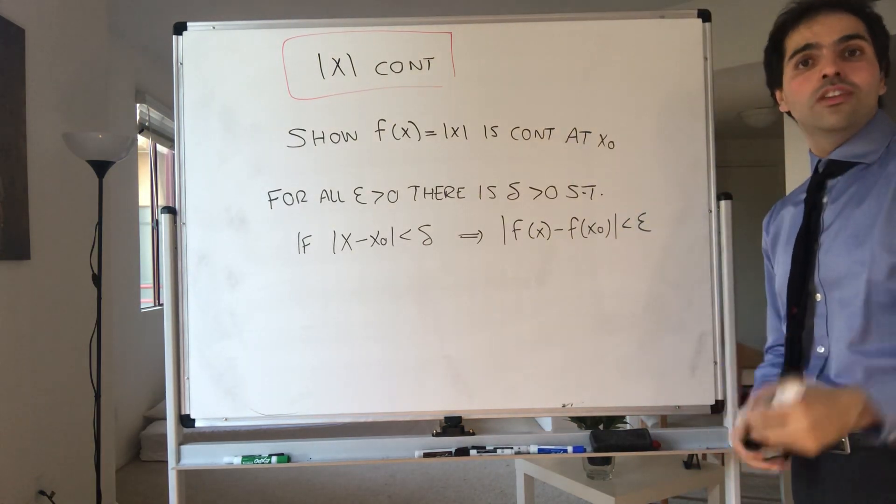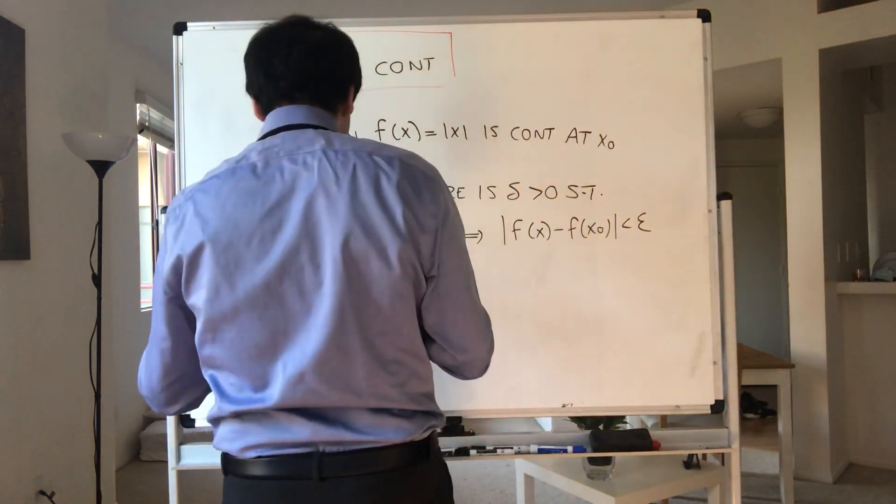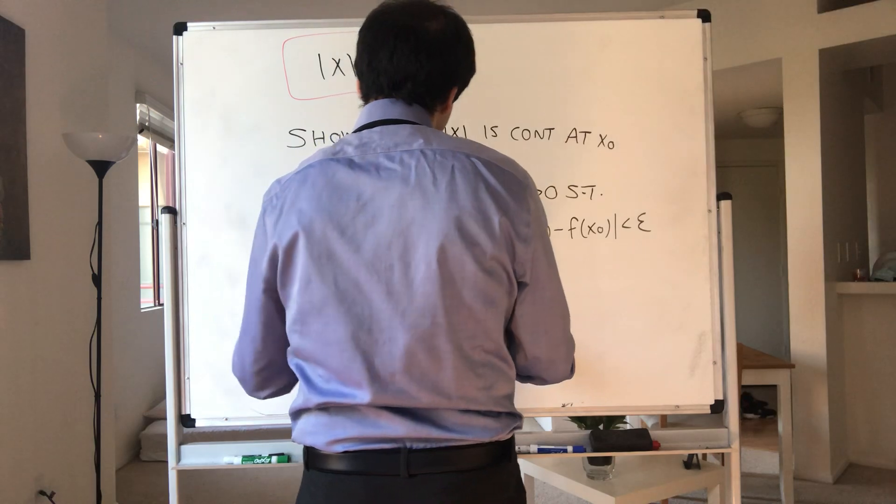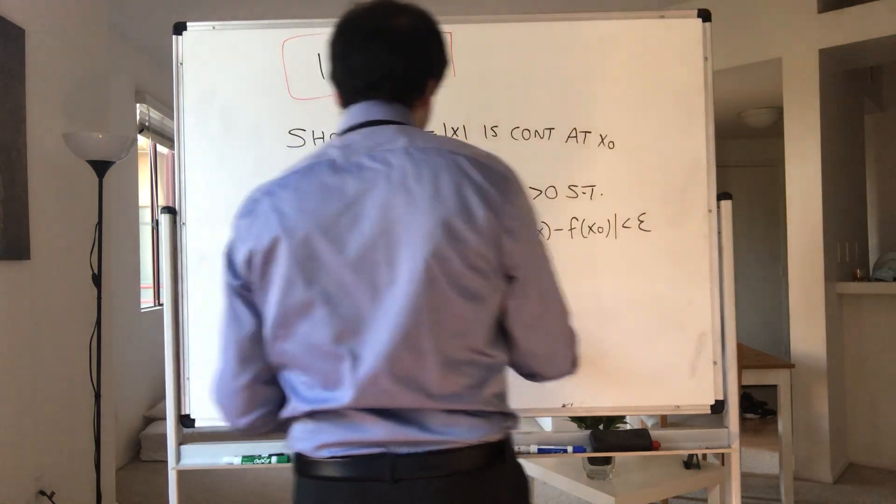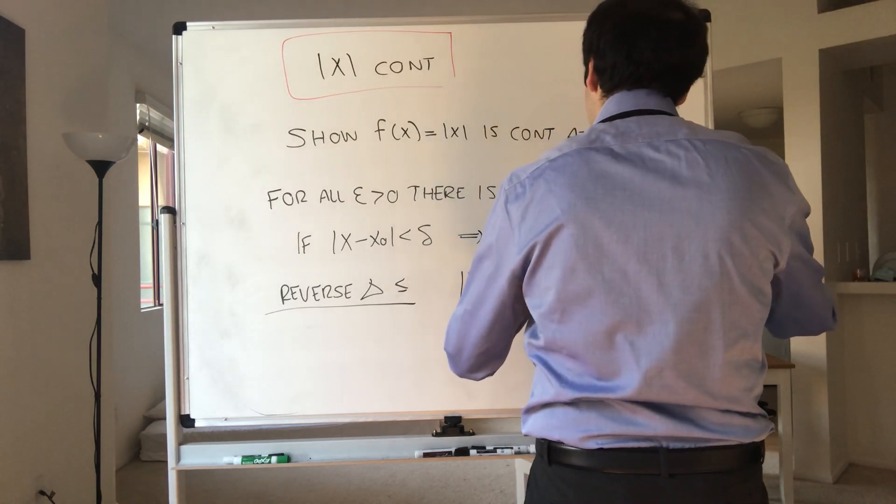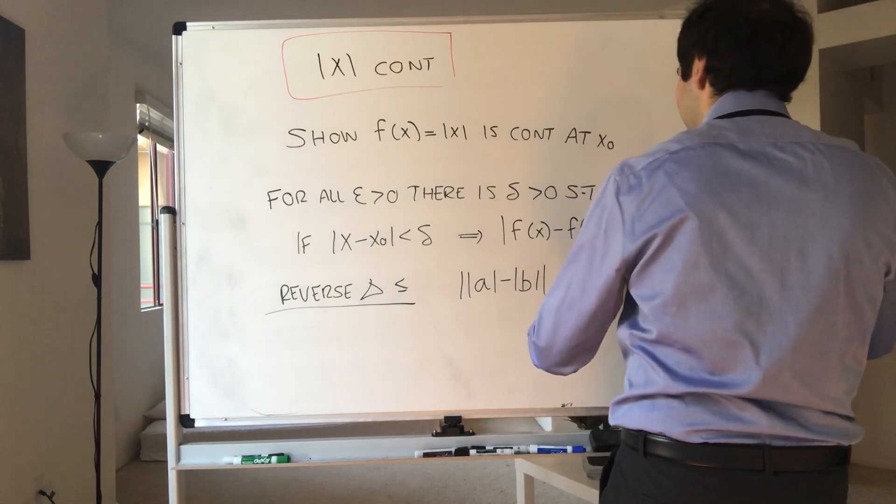And this is actually very quick, it just relies on what's called the reverse triangle inequality, which I would like to remind you what it says. The reverse triangle inequality just says that the difference of absolute values is less than or equal to the difference of the numbers.